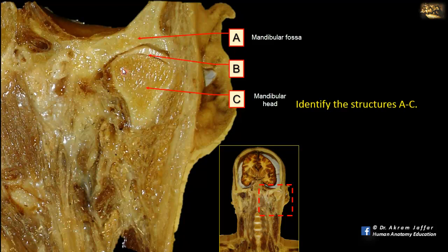Here is the head, and this is the temporomandibular joint. You can see the intraarticular disc within the joint, which divides the joint into two compartments: superior and inferior compartments.